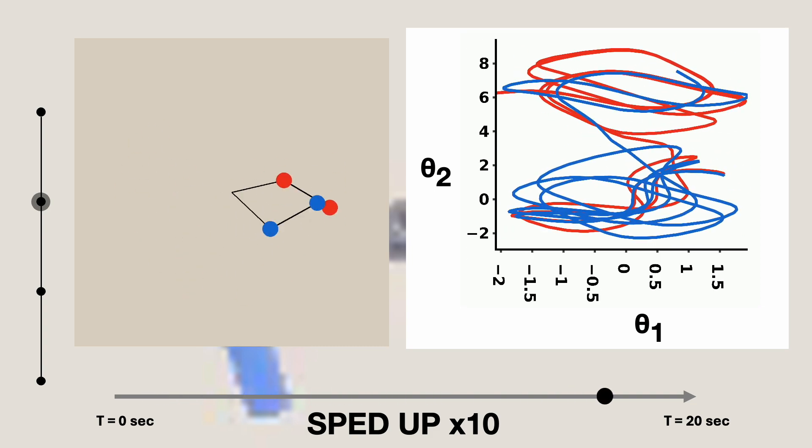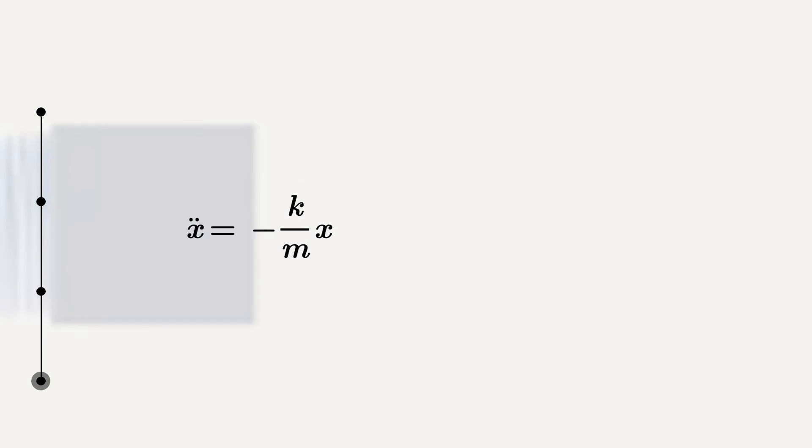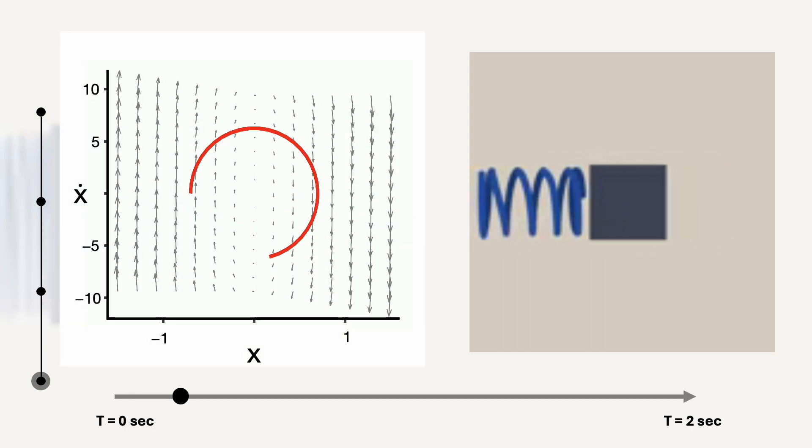Beyond equilibrium states, scientists can uncover behaviors such as chaos. This framework also enables the compact description of complex phenomena. Finally, these equations can be used to simulate the system and generate synthetic data.